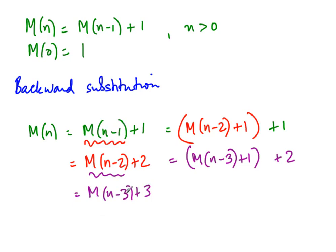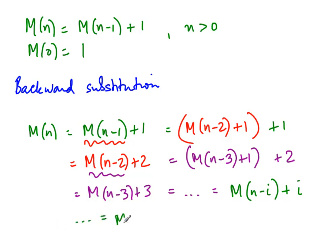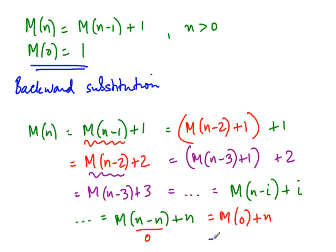As the number being subtracted from n increases, what you are adding outside also increases. You can show that after i steps this expands to M of n minus i plus i. When i becomes n, you reach M of n minus n plus n, which is M of 0 plus n. And M of 0, using the base case, is 1. So M of n equals 1 plus n.